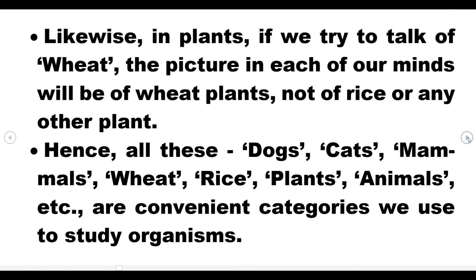Likewise in plants, if we talk about wheat, the picture in each of our minds will be of the wheat plant and not rice or any other plant. Hence, all these — dogs, cats, mammals, wheat, rice, plants, animals — are convenient categories we use to study organisms.